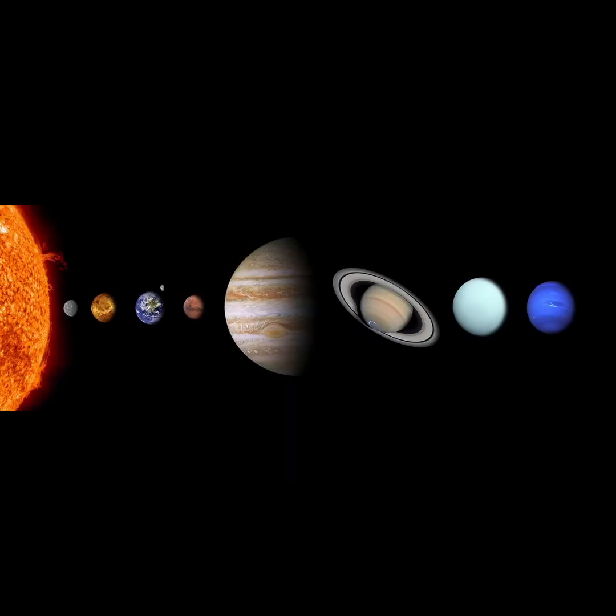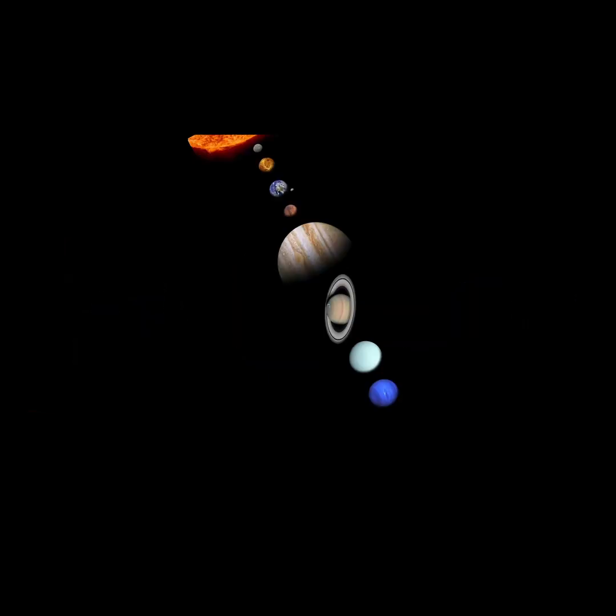Interestingly, the planets of our solar system are not aligned with the plane of the galaxy. Instead, they orbit in a plane that's inclined relative to the galactic plane by about 63 degrees. Our solar system is traveling around the Milky Way tilted on its side.